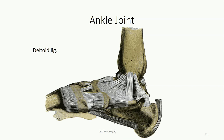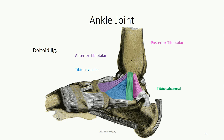On the medial aspect, we have a very broad medial collateral ligament known as the deltoid ligament. Unlike the lateral collateral ligament, the deltoid ligament is one long continuous band in the shape of the Greek letter delta. We can still divide it into four separate bands: the anterior tibiotalar ligament from the medial malleolus to the talus; the tibionavicular projecting down to the navicular bone; the tibiocalcaneal running from the medial malleolus to the sustentaculum tali; and the posterior tibiotalar running from the medial malleolus to the posterior aspect of the talus.